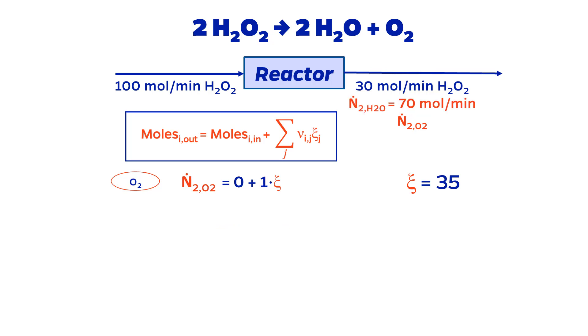Finally, the balance for O2 follows identical logic. N2O2 is the exit flow rate, and there is no oxygen coming in. The stoichiometric coefficient is positive 1. Solving yields 35 moles per minute oxygen going out.